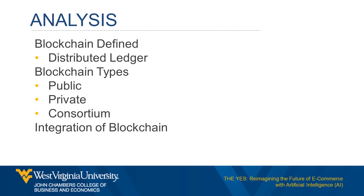Blockchains can be public, private, or consortium. Public blockchains are permissionless, meaning that any individual can access information, submit transactions, and participate in the consensus procedure. Users can obtain economic incentives for their contributions toward transaction verification. The network is entirely decentralized, and participants can remain anonymous due to the lack of a central authority. However, because of this decentralized nature, these networks require more time and computing power to reach consensus, leading to slower performance.